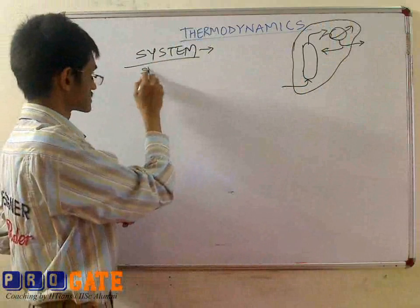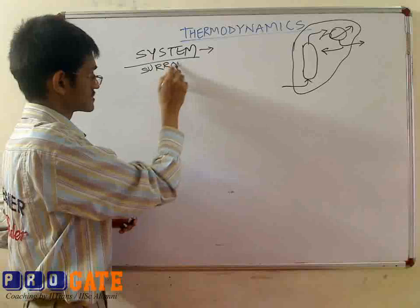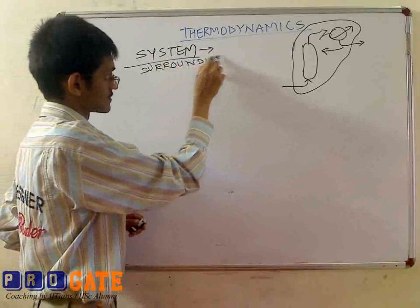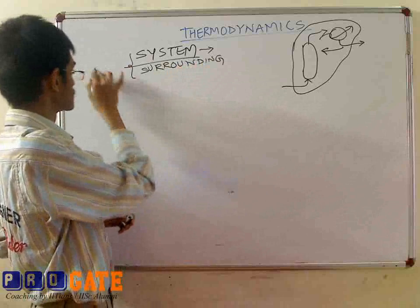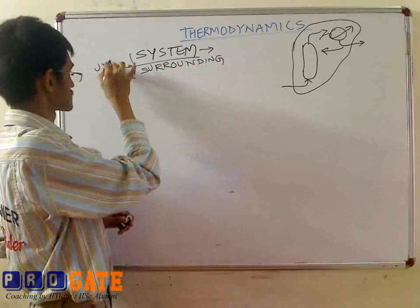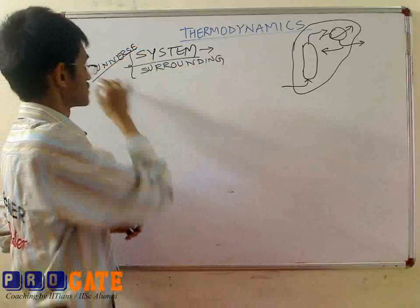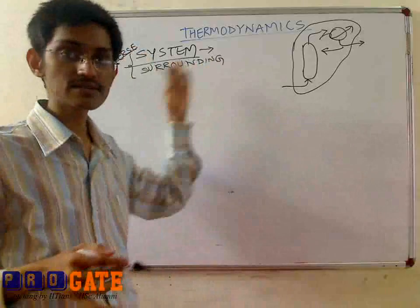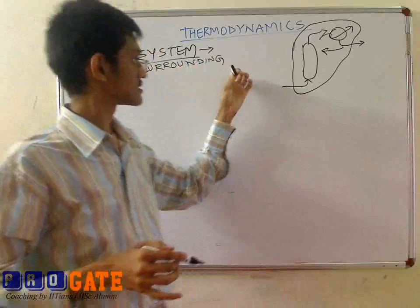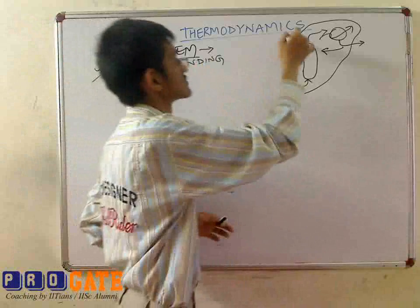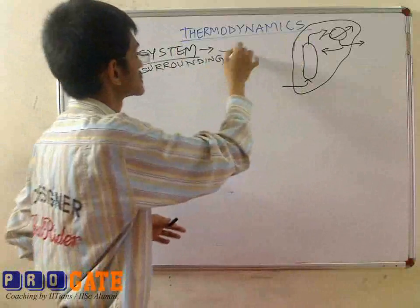So you have the system and the surrounding. Together they would be the universe. The boundary separating the system and the surrounding — the line of demarcation — separates the system and the surrounding.